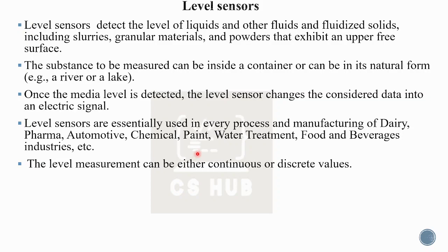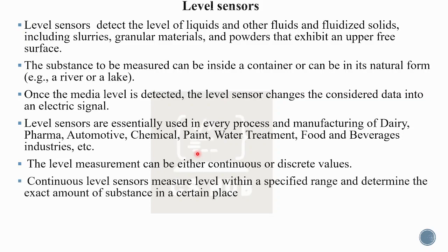There are two types of level measurement: continuous level measurement and discrete measurement. Continuous level measurement uses sensors that measure level within a specified range and determine the exact amount of substance in a certain place.